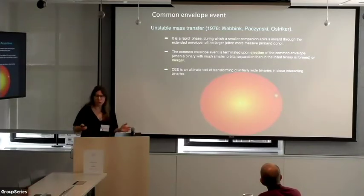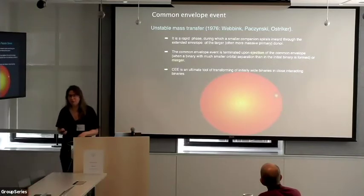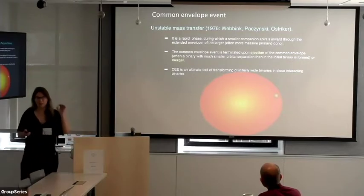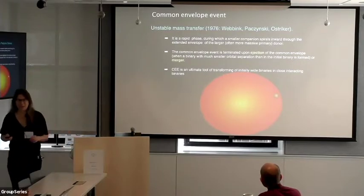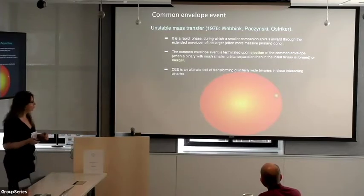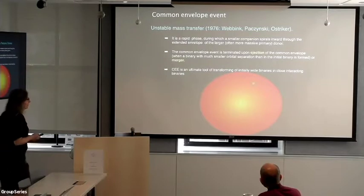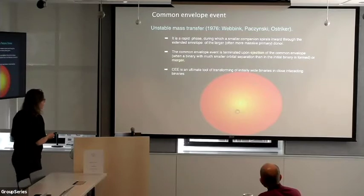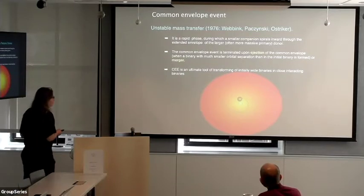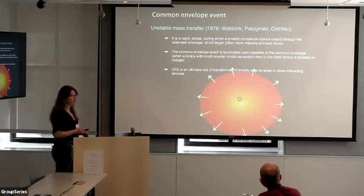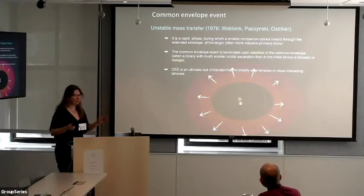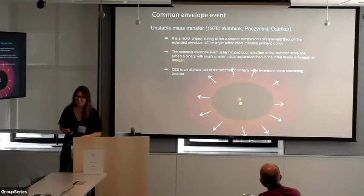In cartoonish form, common envelope evolution looks like this: a little companion goes into the envelope of a bigger star, then something like a post-phase happens, and the envelope goes away.